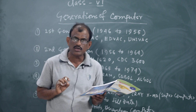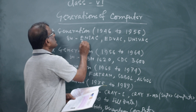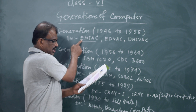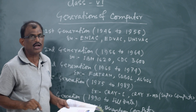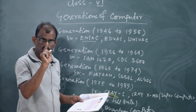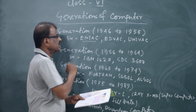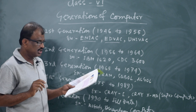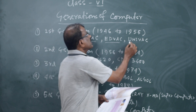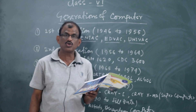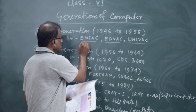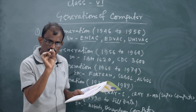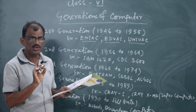The first computer is ENIAC — Electronic Numerical Integrator and Calculator. Then EDVAC — Electronic Discrete Variable Automatic Computer. Next, UNIVAC — Universal Automatic Computer. The vacuum tube is the main component of the first generation computer.